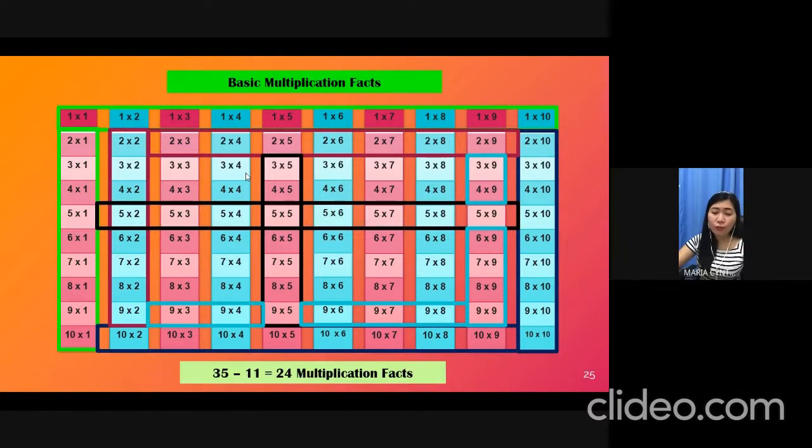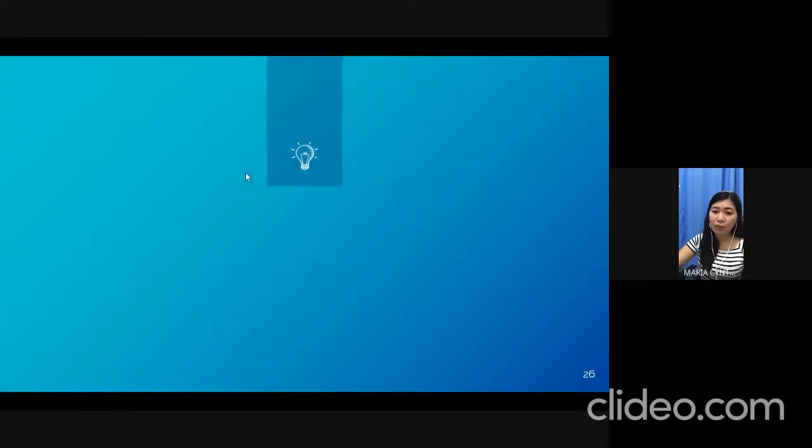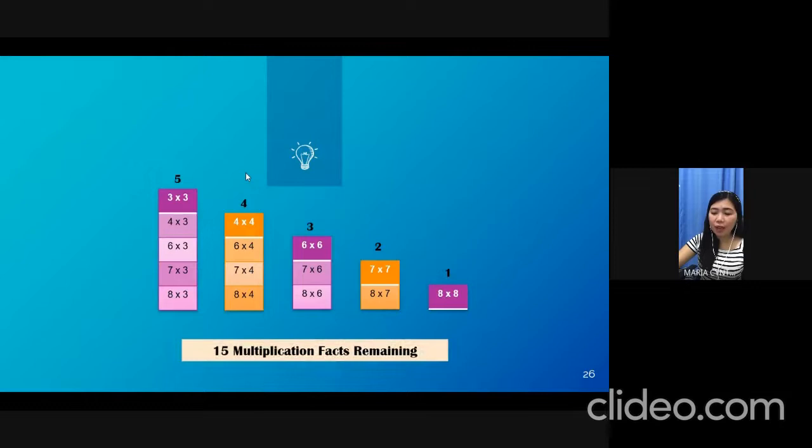After learning 5 rules, you now know 76 multiplication facts. That means you have 24 remaining. But once you remove the duplicates, you have 15 multiplication facts left, and you can learn those remaining in just a short period of time. It just requires a daily practice.